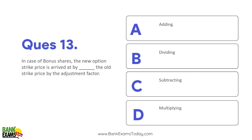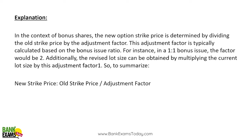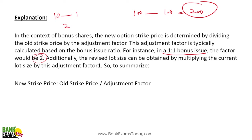Question 14: In case of bonus shares, the new option strike price is arrived at by dividing the old strike price by the adjustment factor. For instance, in a 1:1 bonus, if you had 100 shares you get 100 more — the factor would be 2, so old strike ÷ 2 = new strike. Complicated ratios are also possible, e.g., 1 bonus for every 10 or 18 shares.